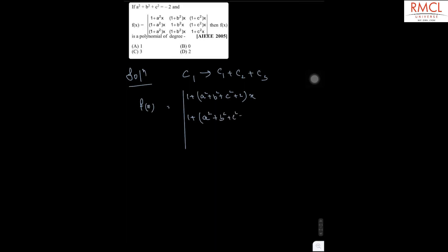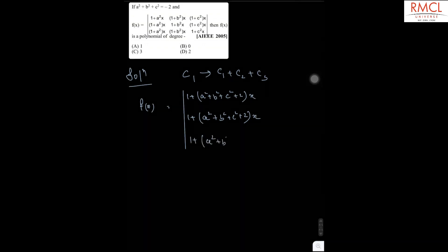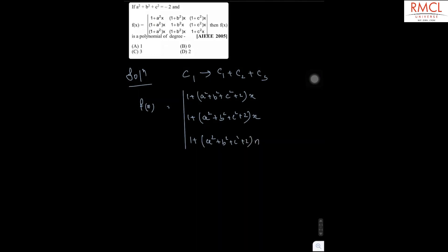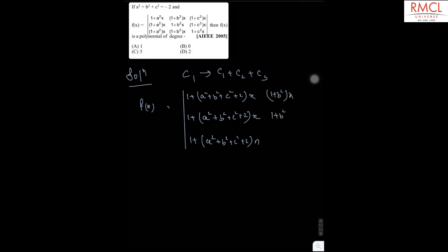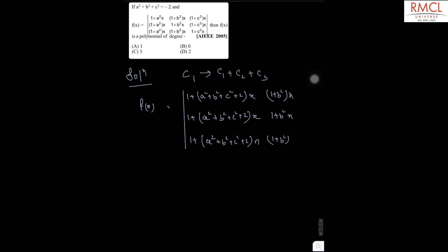So this becomes a² + b² + c² + 2, multiplied by x, and similarly the other entries in column 1 will be the same. Column 2 has entries (1 + b²x), and column 3 has entries (1 + c²x). Since it is given that a² + b² + c² = -2, this term becomes 0.